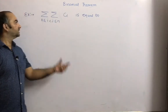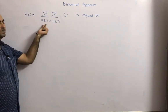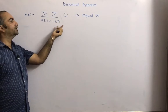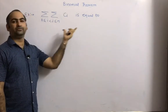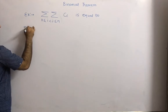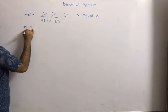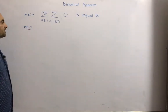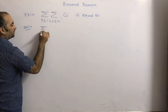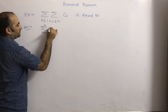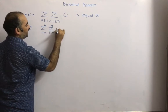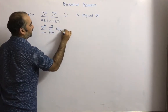The next example is: sigma sigma where 0 ≤ i < j ≤ n of nCi. We need to find this. From last class we discussed: sigma i=0 to n, sigma j=0 to n of a_i · b_j. In this expansion we have three types of terms.